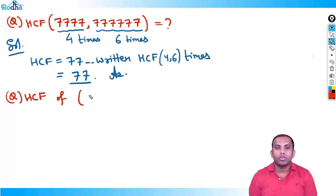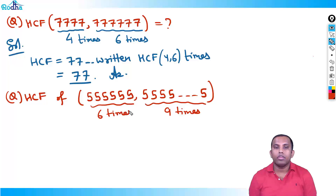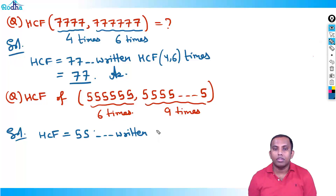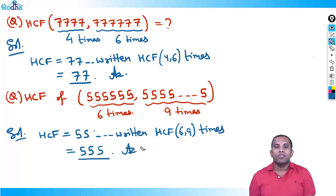One more example: HCF of 555 written 6 times and 555 written 9 times. HCF = 555 written HCF(6, 9) times. HCF of 6 and 9 is 3, so 555 written 3 times = 555555. Wait, 555 written 3 times is 555555 — but condensed, 555 written 3 times is the answer.